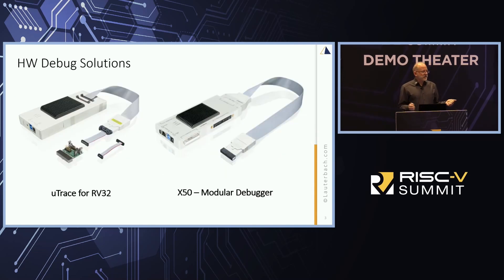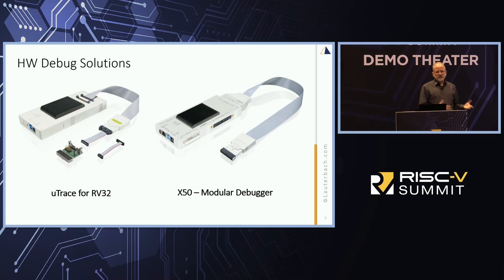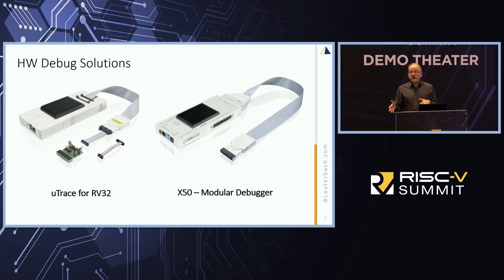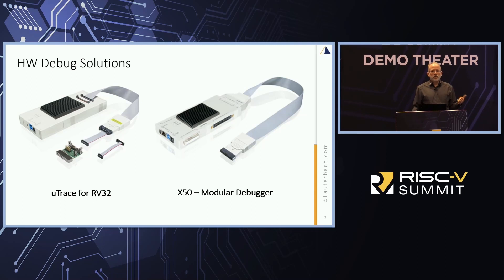Let's talk about debug for a minute. We have a couple of different products that range from our lower-end micro trace, which is for 32-bit architectures. This will give you access to the registers like any other debugger. The nice thing is when we finally get trace finalized and the committees are happy with it, the hardware is there so we can start doing 4-bit trace. It's a nice low-end product that will give you the ability to work with microcontroller-type products.